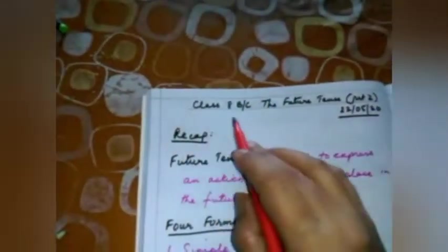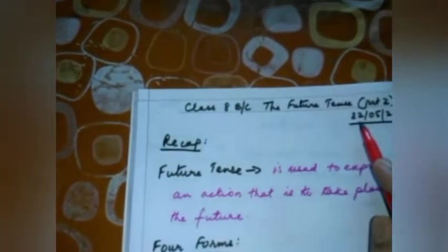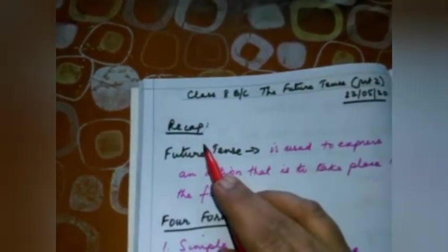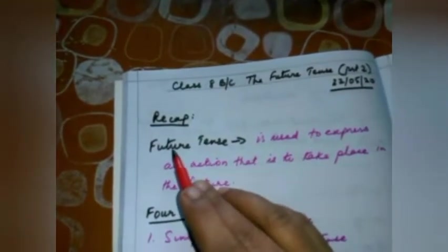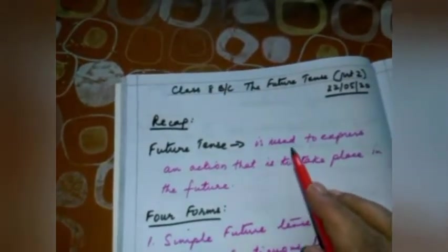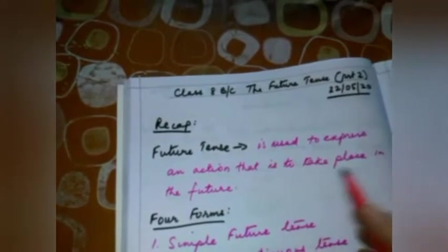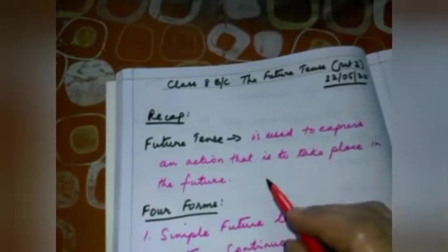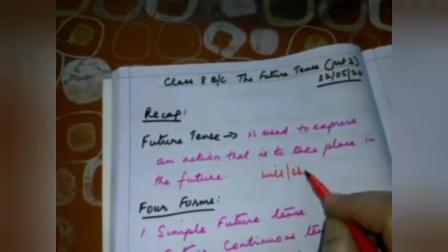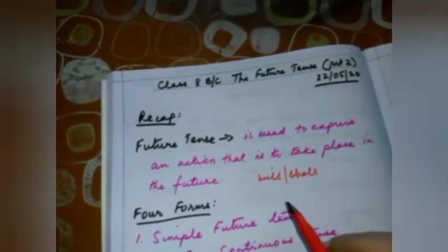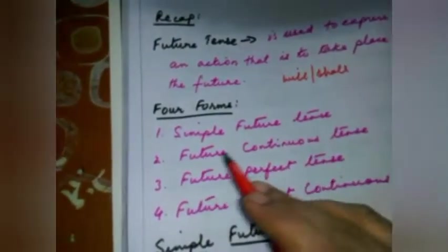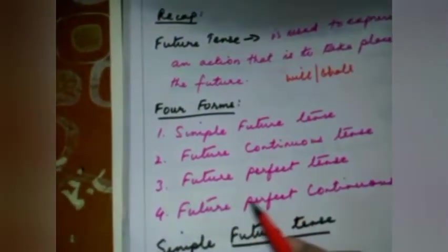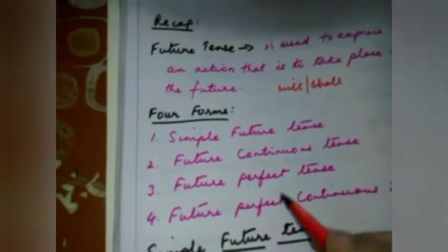Good morning, Class 8 B and C. Today we will do future tense part 2. Part 1 we have done yesterday. Today is part 2, date 22nd. A quick recap of what we did in the last class: the future tense is used to express an action that is to take place in the future. Two most important words here are 'will' and 'shall.' We have done the 4 forms: simple future tense, future continuous tense, future perfect tense, and future perfect continuous tense.